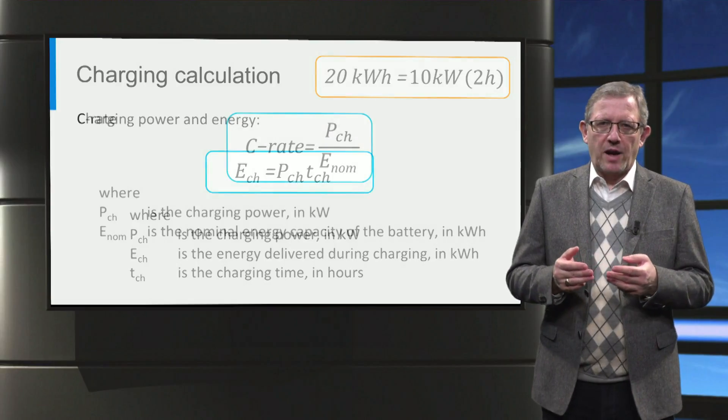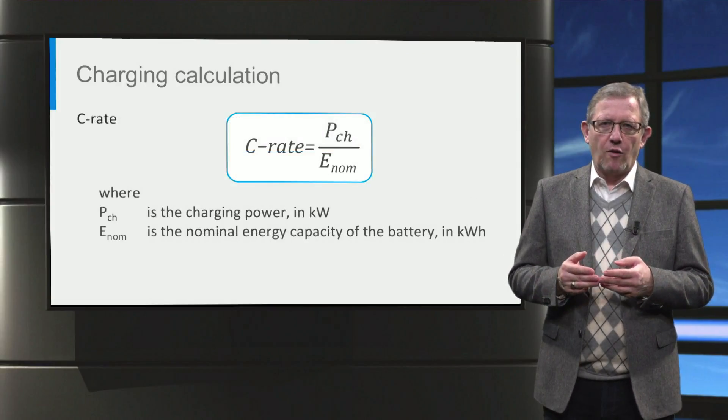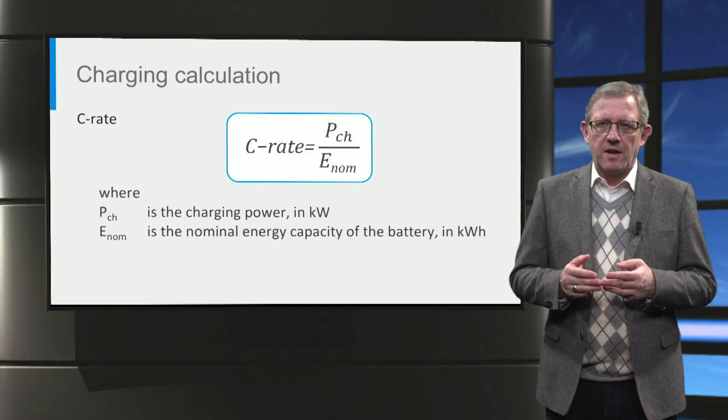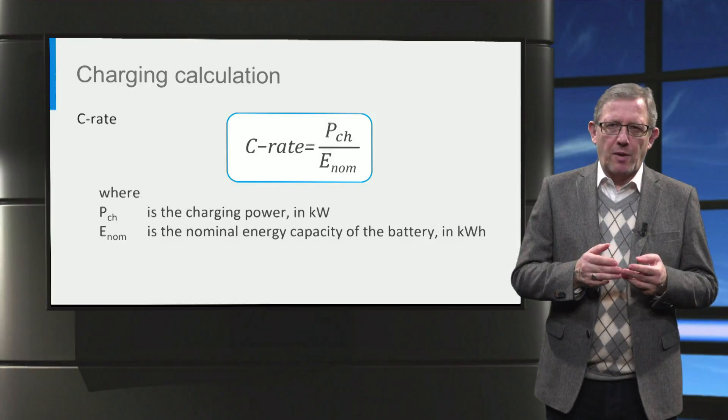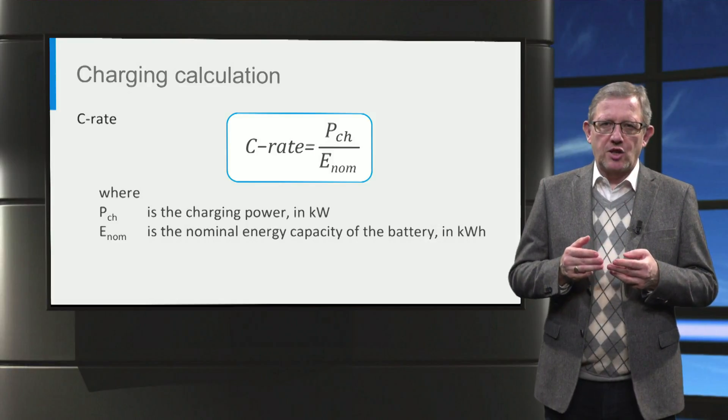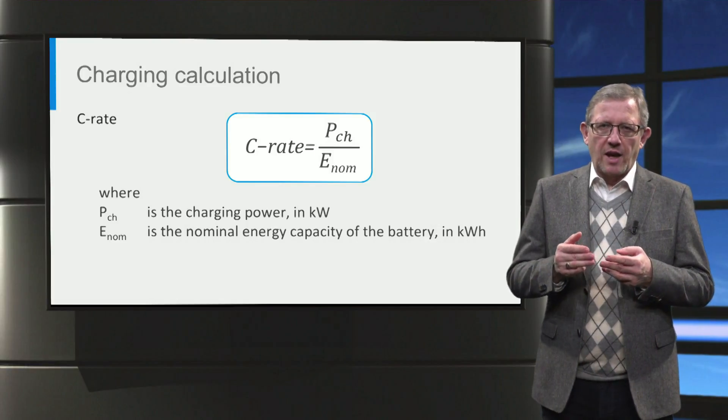The next important parameter is the charge rate, often referred as a C-rate. It is the ratio of the charging power to the nominal energy capacity of the battery. As the charging current increases, so does the C-rate.